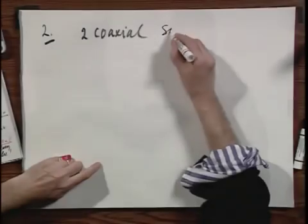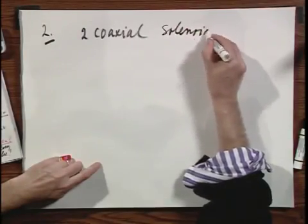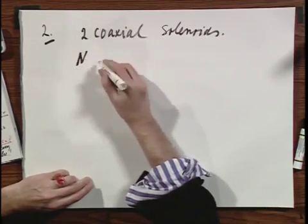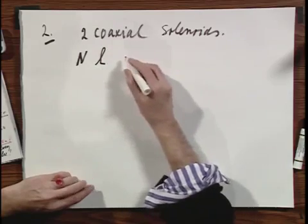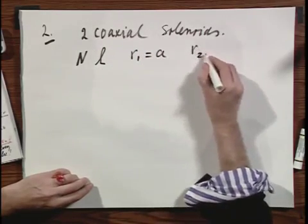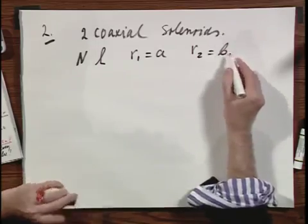Okay, two coaxial solenoids, and they each have n windings, they each have length L, and one has radius R1 which is A, and the other has radius R2 which is B, and they are in series.